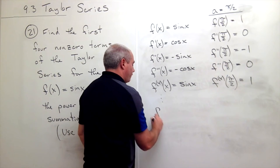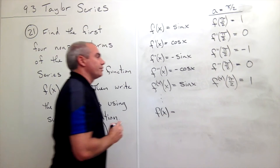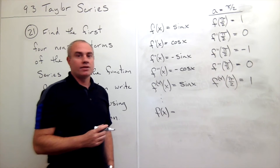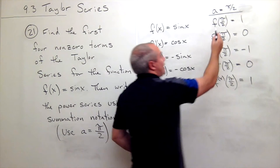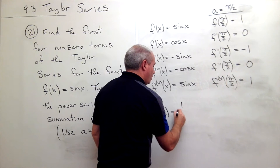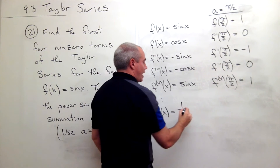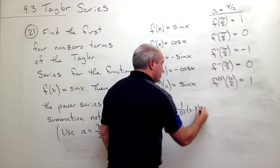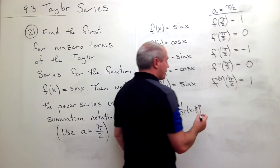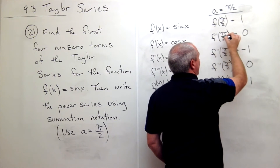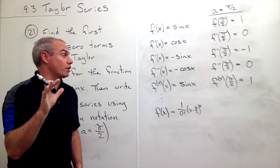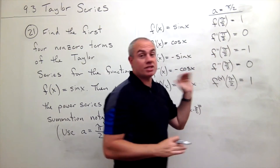Now if I want to write out my function f of x as a Taylor series, the first thing I want to write is f of a. So f of a in this case is f of pi over two, which is one. So I get one over zero factorial times x minus pi over two to the zeroth power, which of course is one. The second term is just going to be zero because f prime of pi over two is zero, so the x minus pi over two to the first term is just going to be zero — I'm going to skip it.